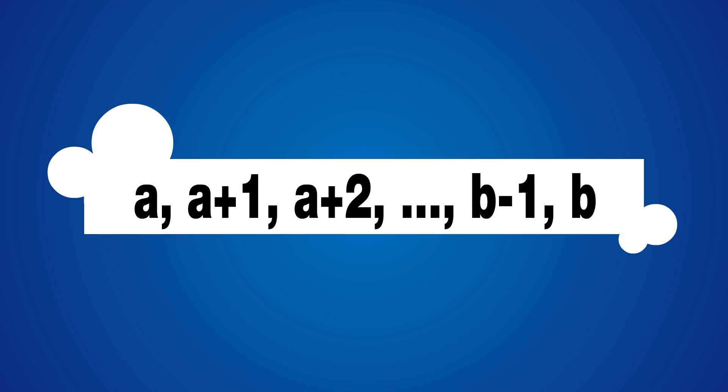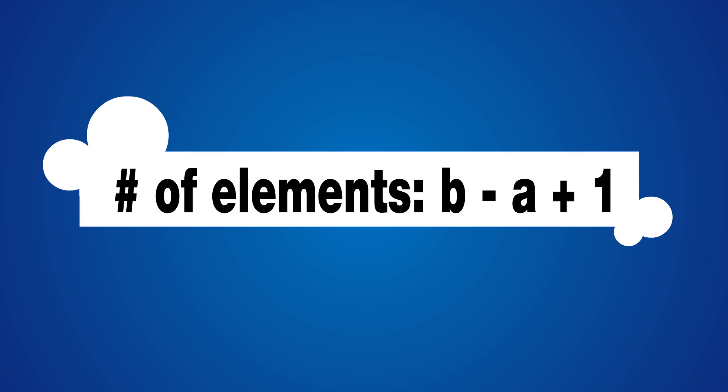In fact, there is a general formula to calculating the number of terms in a list where the common difference is equal to 1. If we let the first term equal a, the second term equal a plus 1, the third term equal a plus 2, all the way to b minus 1 and b, then the number of elements in this type of list is b minus a plus 1. So b is the last term, a is the first term, and we're adding 1.